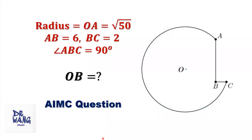Hello, everyone. I'm Dr. Wen. Here is the question. This is a circle. Radius OA equals square root of 50. AB equals 6. BC equals 2. Angle ABC equals 90 degrees. What is the distance from point B to the center of the circle O?